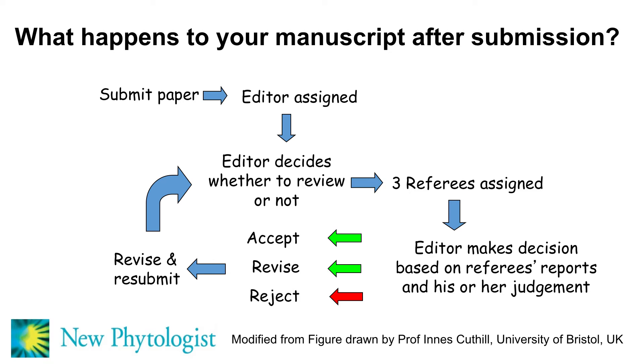There are three basic outcomes: the manuscript can either be accepted, accepted subject to satisfactory revision, or rejected. If the manuscript is accepted subject to revision, you will be invited to submit the revision, which comes back to the editor. At that point, the editor will decide whether enough work has been done — in which case it is accepted — or, in the case of more substantial revisions, the editor may send it out again to the referees for further comment. After that additional round of refereeing, the outcome would normally be acceptance.